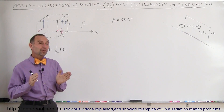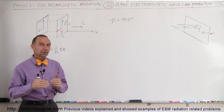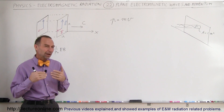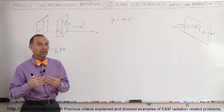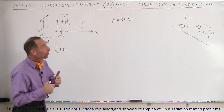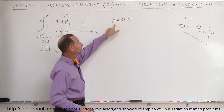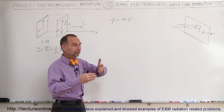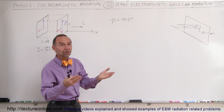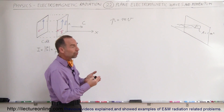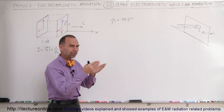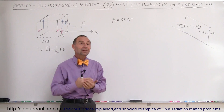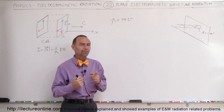Welcome to ElectronLine. In this video we're going to talk about the momentum of electromagnetic radiation. This is probably something very strange, because remember the equation for momentum: momentum is equal to mass times the velocity of an object. For example, a car has a mass of 1,000 kilograms moving at 20 meters per second — we get momentum. But electromagnetic radiation does not have any mass, so how can it have momentum?